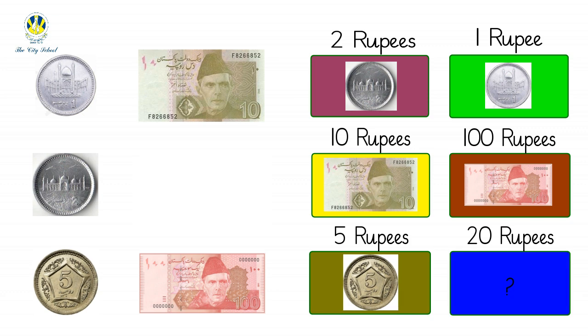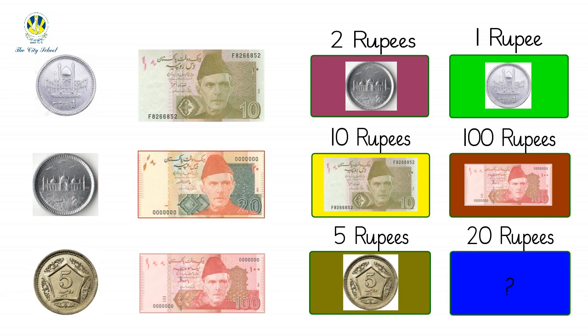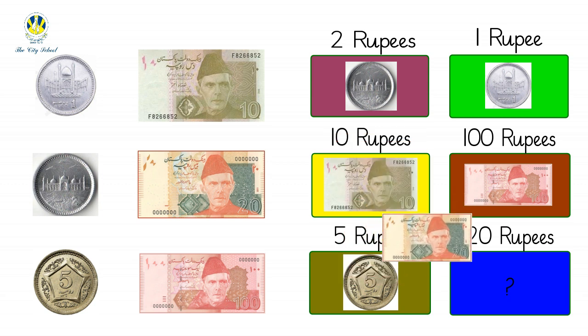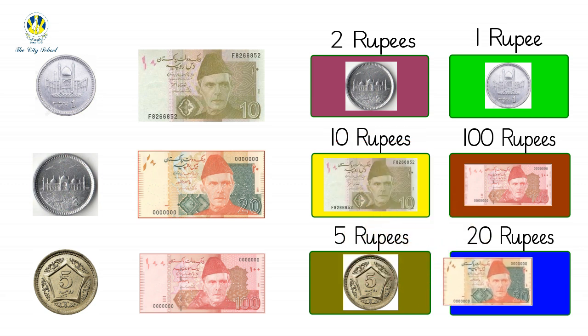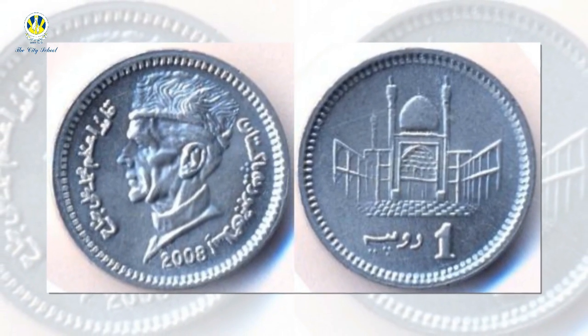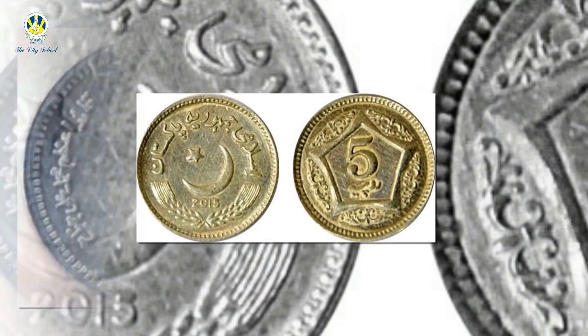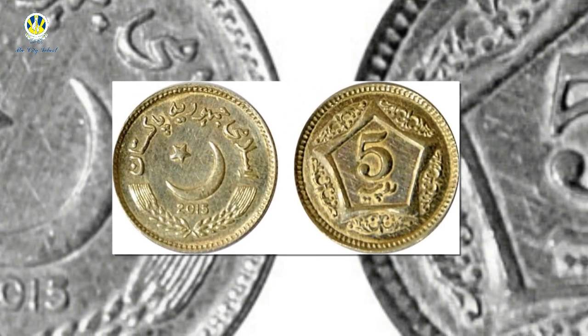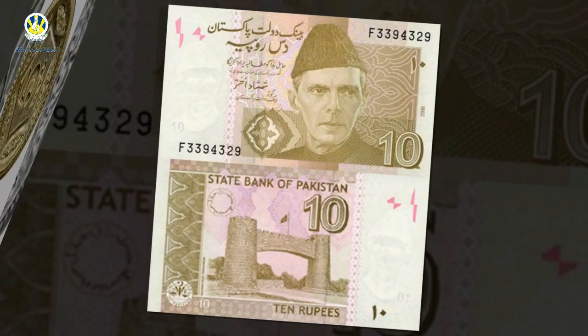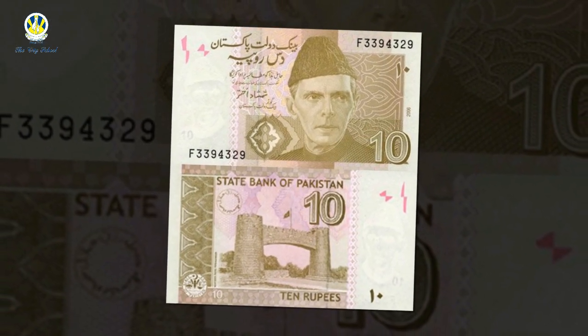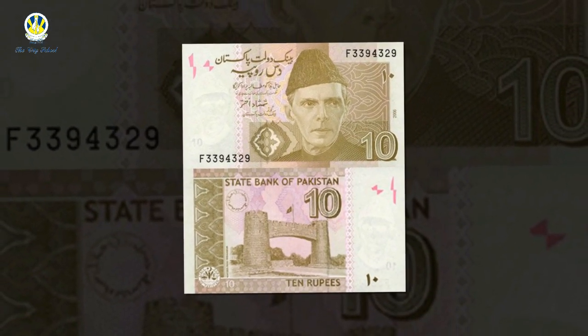Now let's find a twenty rupees note. Superb! This is a twenty rupees note. Well done, kindergarteners — it was fun learning together. That's the end of the lesson.